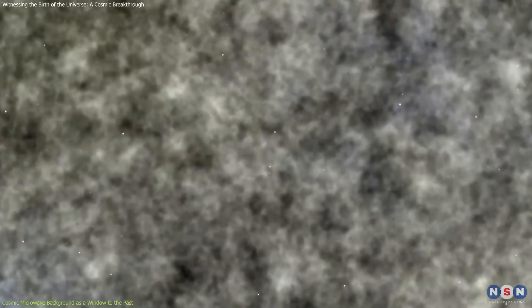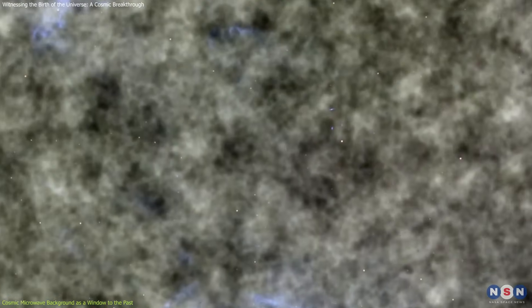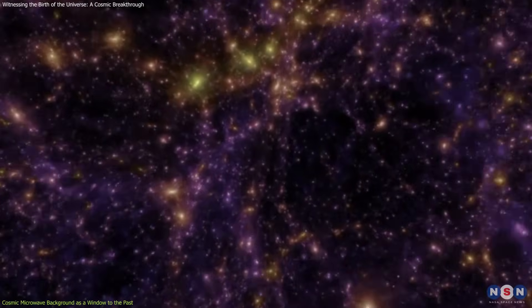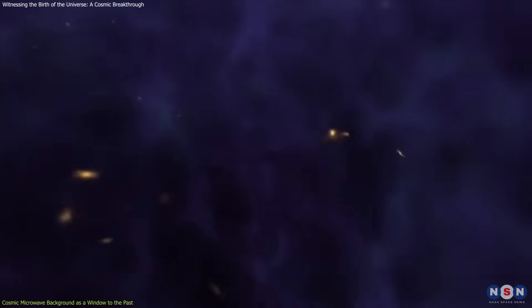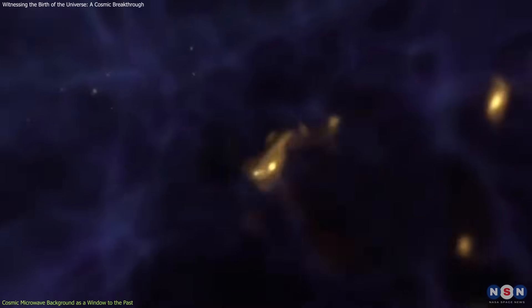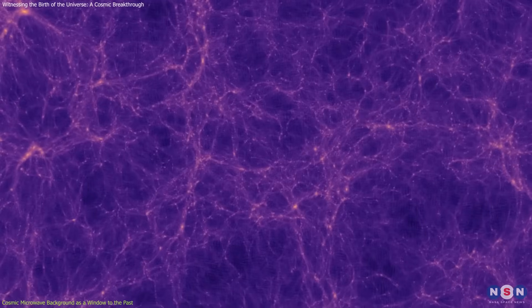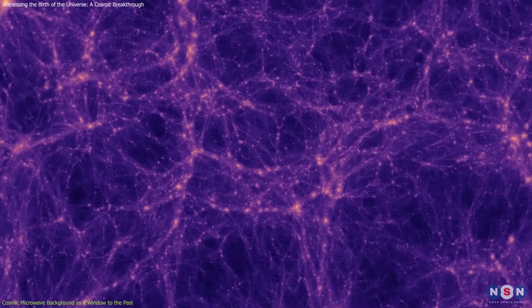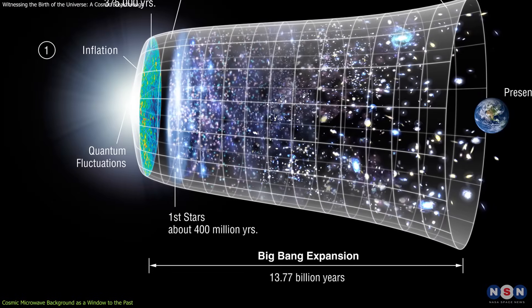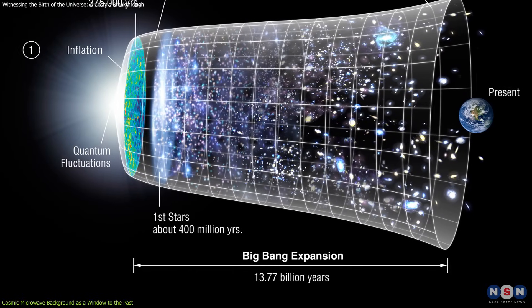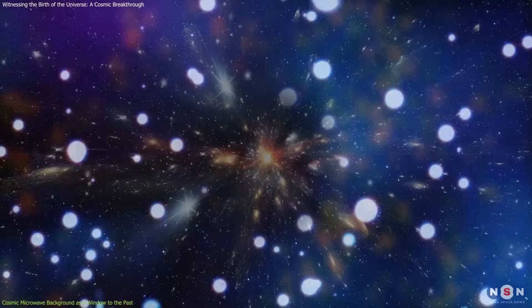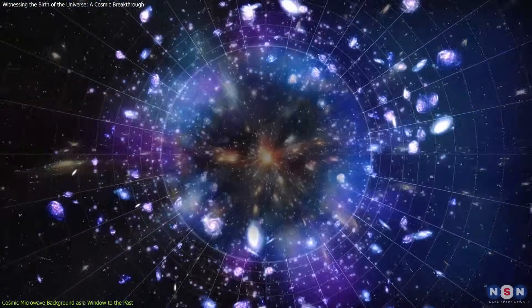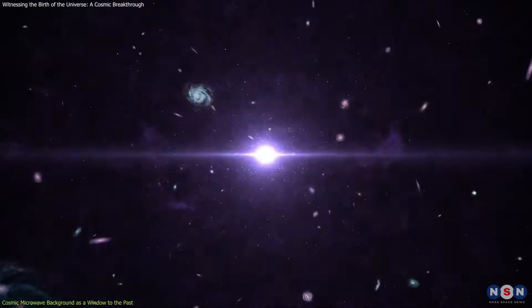ACT's precise measurements reveal density fluctuations in this ancient light, offering critical insights into the structure and age of the universe. These variations played a key role in shaping galaxies and large-scale cosmic structures over billions of years. The new data confirm the estimated age of the universe at approximately 13.8 billion years, and refine our understanding of cosmic inflation, the rapid expansion that occurred in the first fraction of a second after the Big Bang.